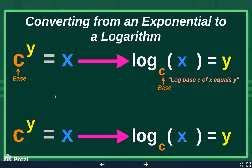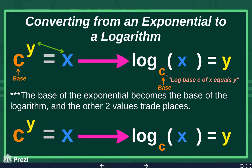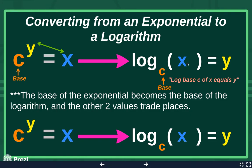There are two different ways to think about doing this conversion. One way: the base of the exponential is going to be the base of the log. Then notice that y and x kind of switch sides of your equal sign. The y was with the base, but now it's on the opposite side. The x was not with your base, but now it's hanging out with the base. So the base stays the same, and your y and x hop over the equal sign and trade places.